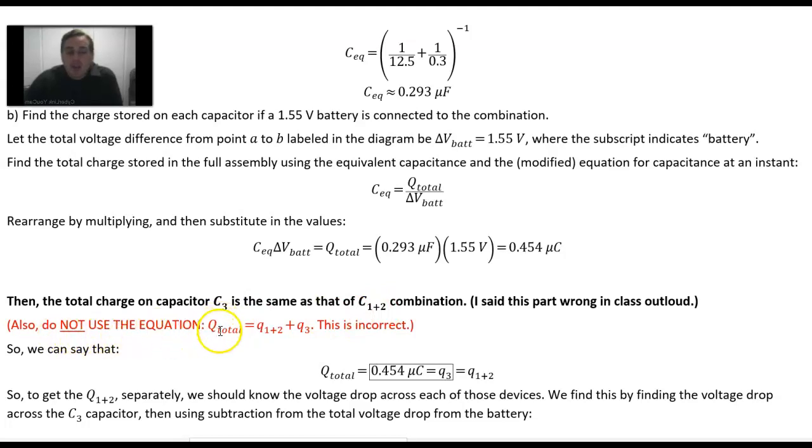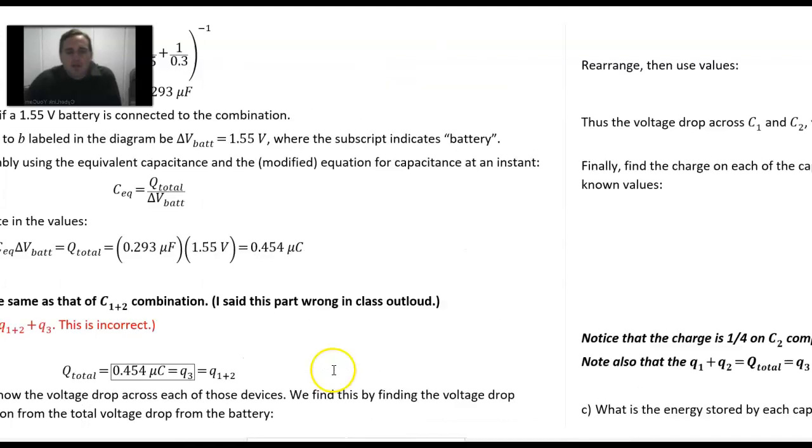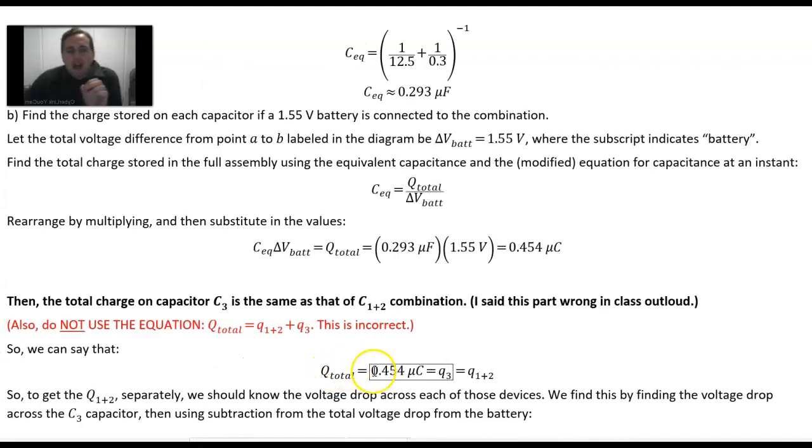So the charge on capacitor 3 is the same as the 1,2 combination charge. Do not use this equation that q_total is equal to q_1,2 plus q_3. That's incorrect. It turns out that this charge, 0.454 microcoulombs, is on capacitor 3 and it's also on the C1,2 combination. So we can first deduce that 0.454 is q_3.